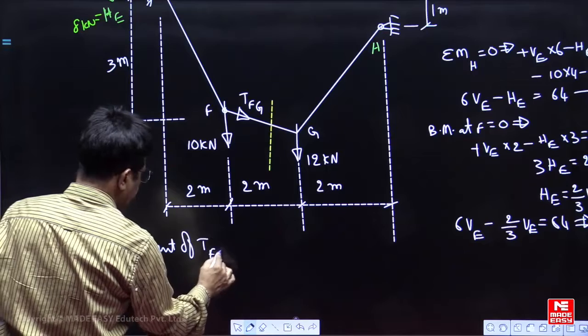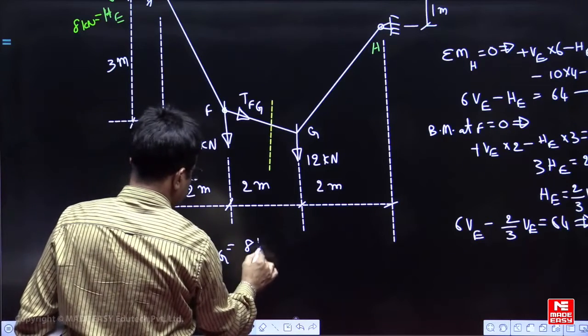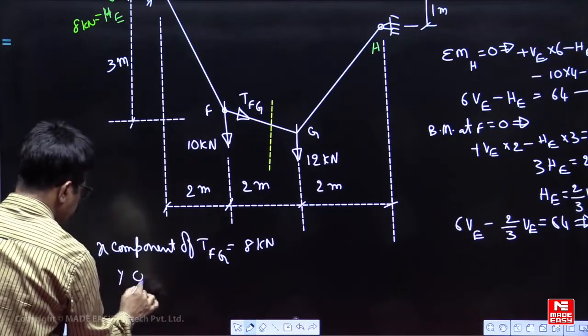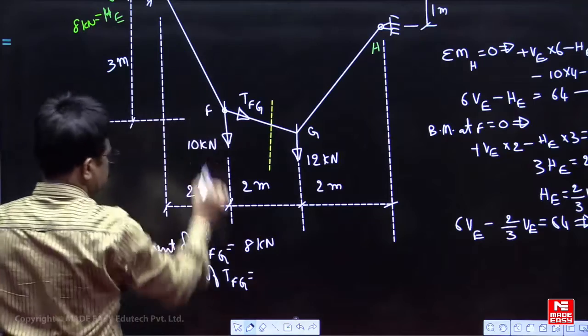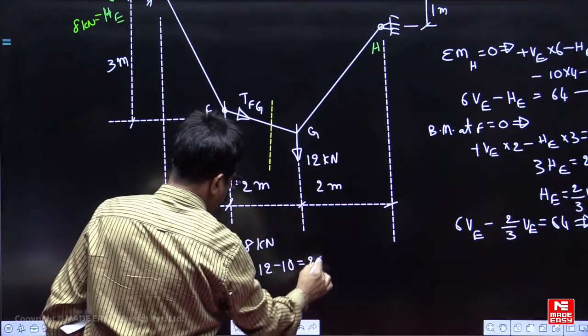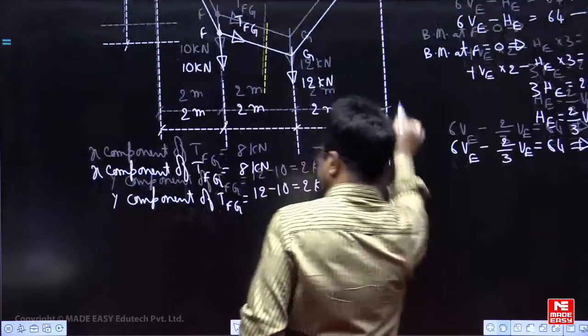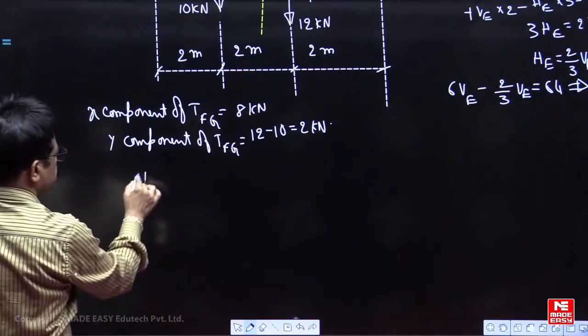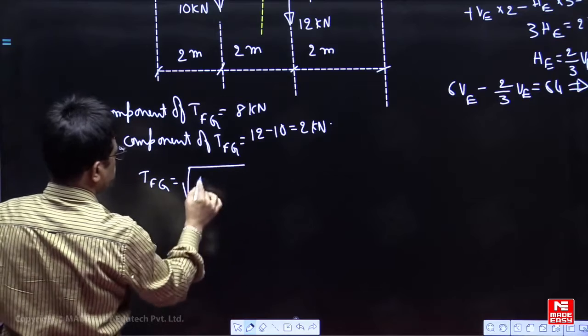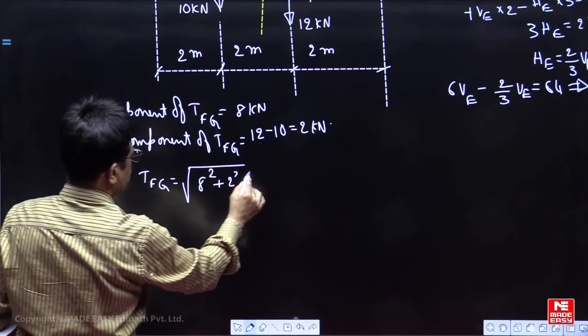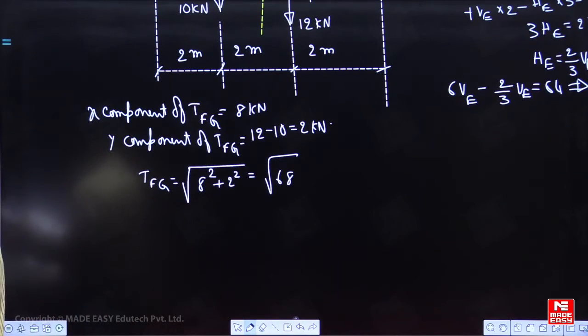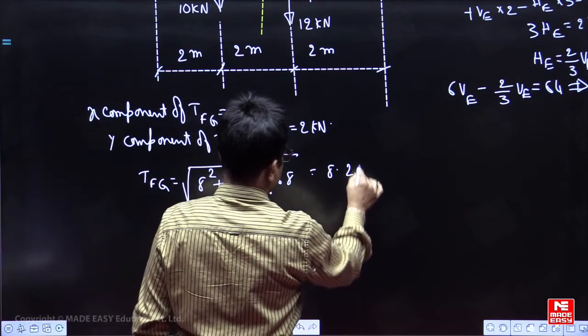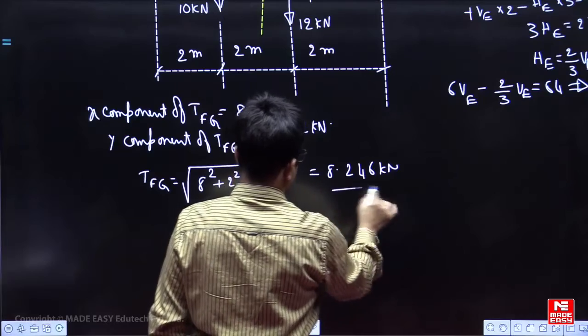So, X component of TFG is equal to 8, then Y component. Already 12 is there, 10, 12 minus 10 you will get 2 kilonewton. So, you will get tension in the FG is equal to square root of 8 square plus 2 square, 64 plus 4, square root of 68, so 8.246 like this.